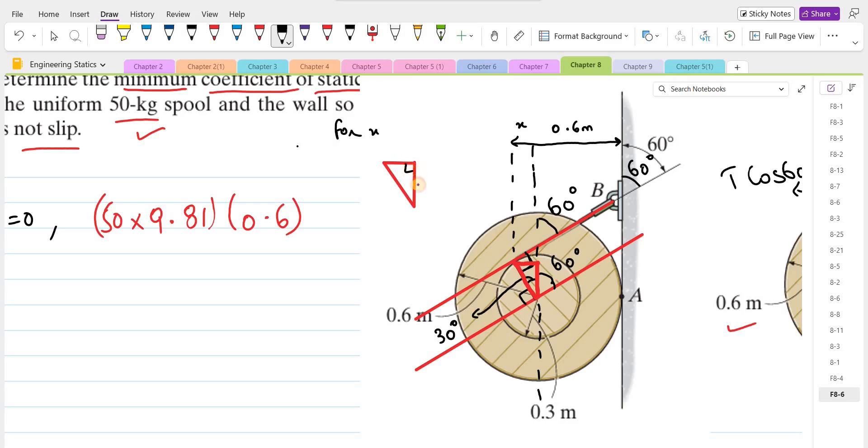So for the moment arm, we have to consider this distance which is 0.6 plus this distance x. And if I draw it separately, this is 90 degrees, this is 30 degrees, and this length is 0.3 meters, the radius of the smaller circle. So for the distance x, we can use the ratio of sine. Sine 30 equals x over 0.3. So x is 0.3 sine 30.